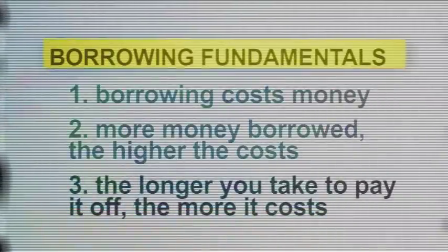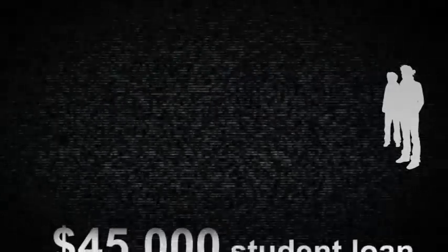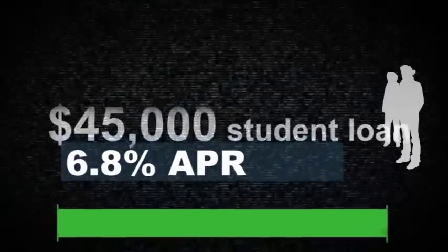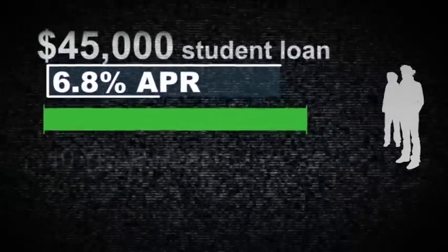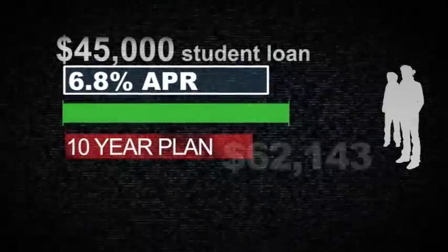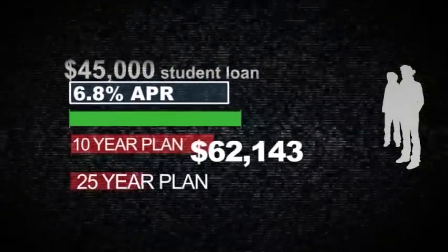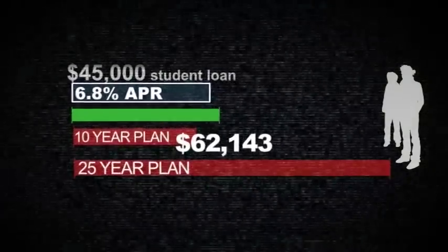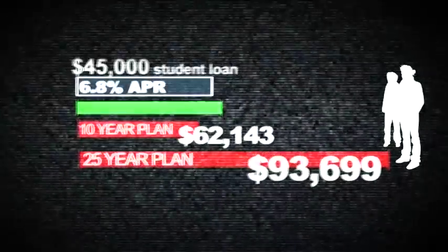The third borrowing fundamental is the longer you take to pay off the loan, the more it will cost you, because you're paying interest and fees over a longer period of time. Let's look at $45,000 in student loans. $45,000 is the principal. This loan has a 6.8% APR. If you pay the loan in 10 years, it will cost you $62,143 to pay it off.